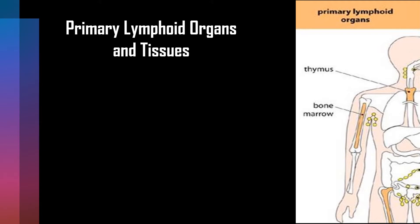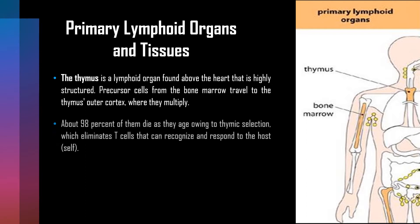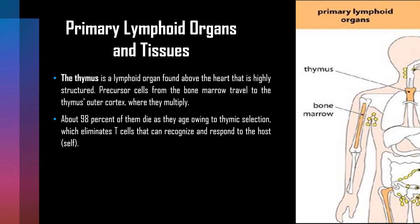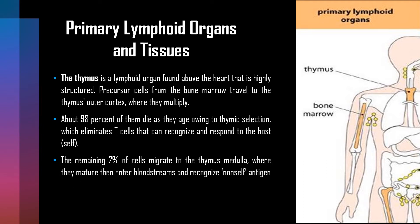Primary lymphoid organs are the thymus and bone marrow. The thymus is a lymphoid organ found above the heart that is highly structured. Precursor cells from the bone marrow travel to the thymus outer cortex where they multiply. About 98% of them die owing to thymic selection, which eliminates T cells that can recognize and respond to the host. The remaining 2% migrate to the thymus medulla where they mature, then enter the bloodstream and recognize non-self antigens.